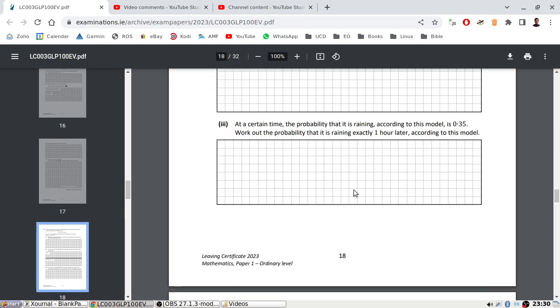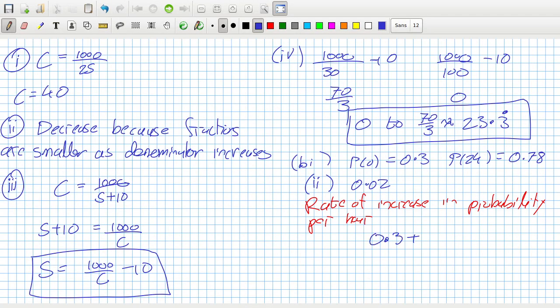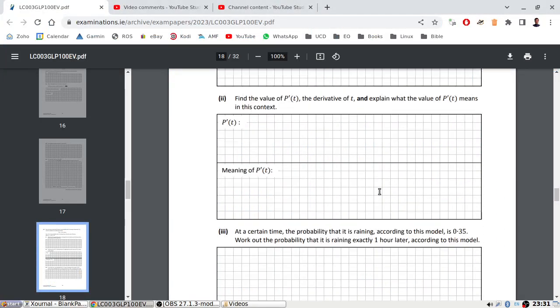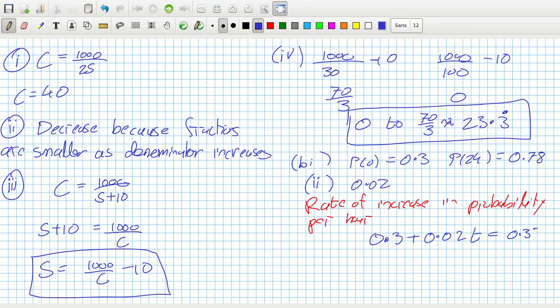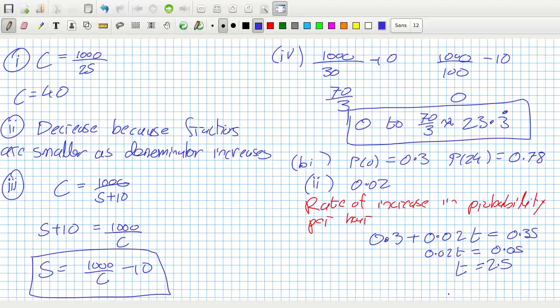At a certain time, the probability that it's raining is 0.35. Work out the probability that it's raining exactly one hour later. First, we need to figure out when the 0.35 happens. When does 0.3 plus 0.02t equal 0.35? That would be 0.02t equals 0.05, and 0.05 divided by 0.02 is 2.5. Work out the probability that it's raining exactly one hour later, so we have to put in t is 3.5.